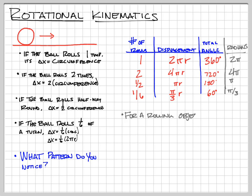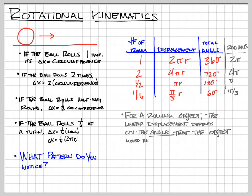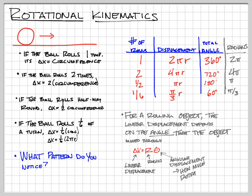For a rolling object, its linear displacement — delta x — depends on the angle that we roll through, as long as that angle is measured in radians. A little equation that tells us what's going on: delta x equals r times theta. Delta x is our linear displacement, r is our radius, and theta is the angular displacement — it's how much of an angle we turn through. It really needs to be measured in radians.